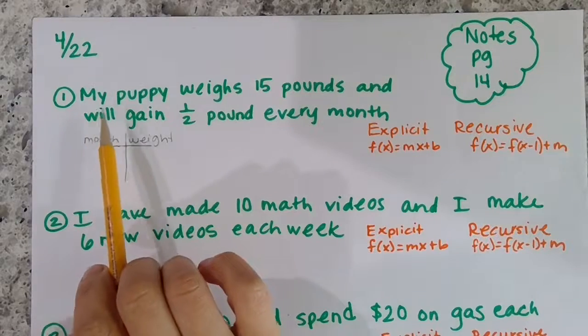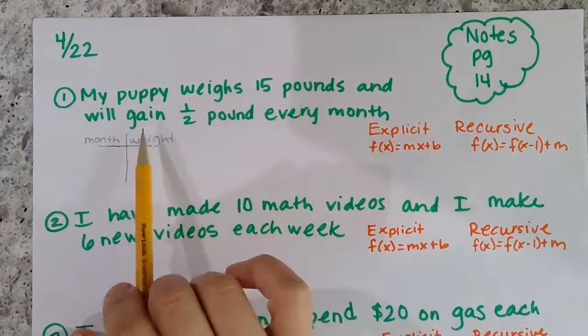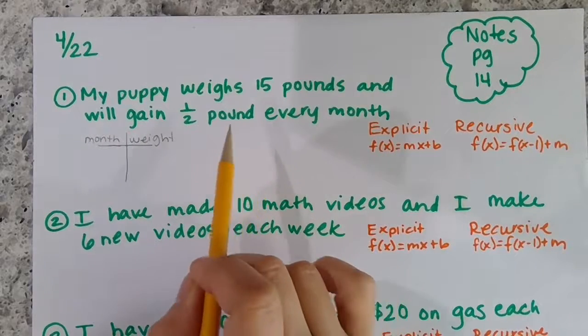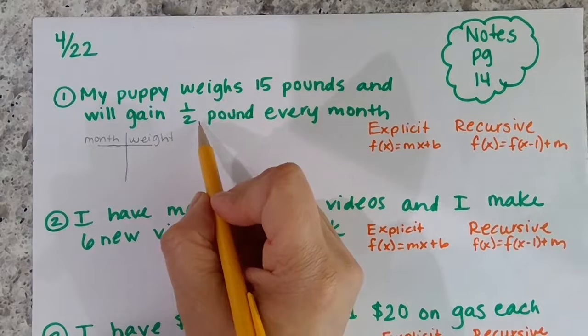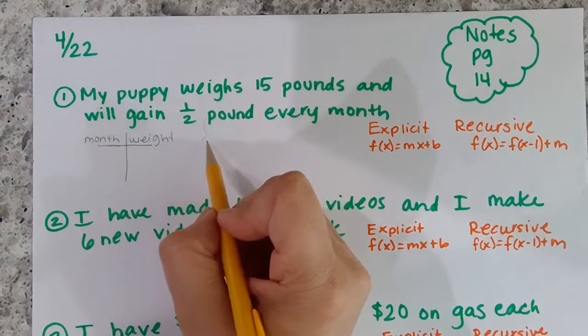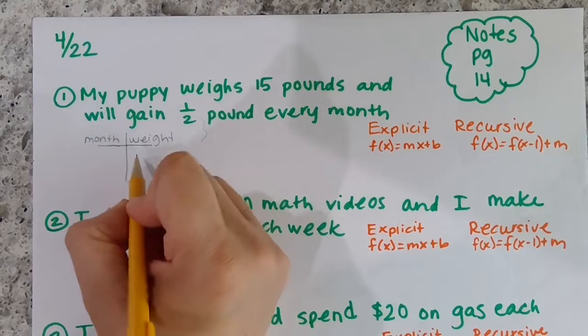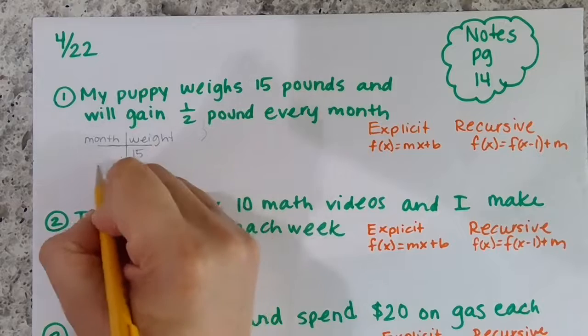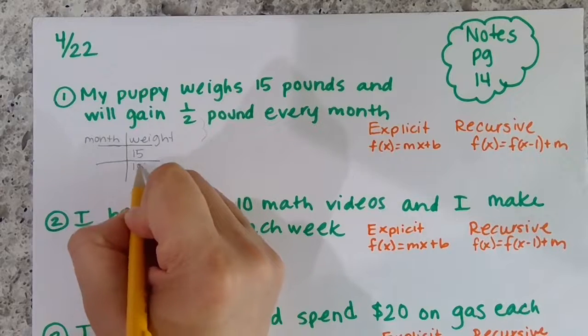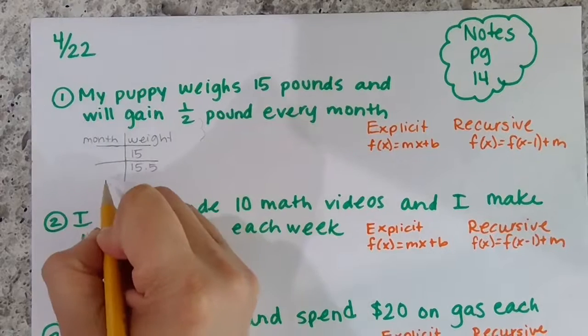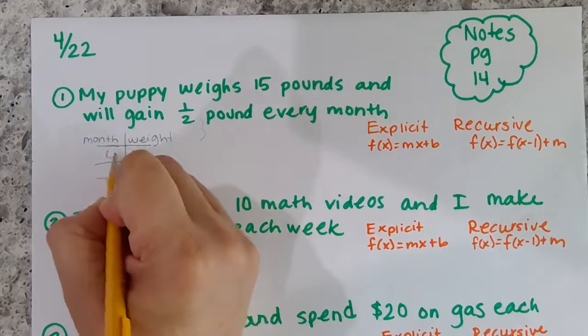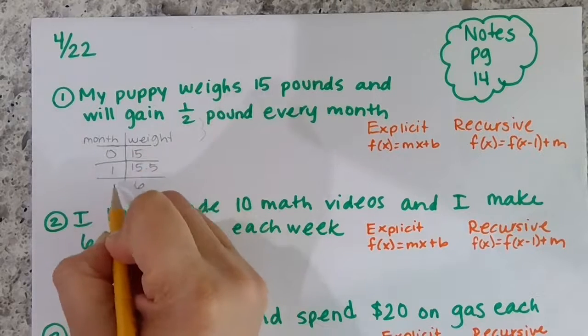First problem: my puppy weighs 15 pounds and will gain half a pound every month. So he's gaining half a pound every month, so I know that's what's changing. He started with 15, so the next month he's going to weigh 15 and a half, then 16. At the beginning he was 15, after one month, after two months.